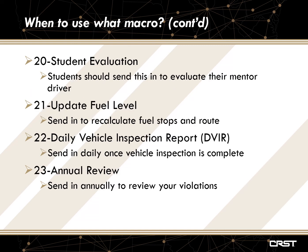Another macro that is very important for you to use would be macro 21. This is used when you are under a load to update your fuel level to recalculate your fuel stops and fuel route. This will help prevent delays by allowing you to fill completely rather than stopping at an off-network fuel station, reaching out to your driver manager to have them turn on your fuel card, and then having to stop another 100 miles or so to refuel completely, as we cannot turn on your card for a full fill.